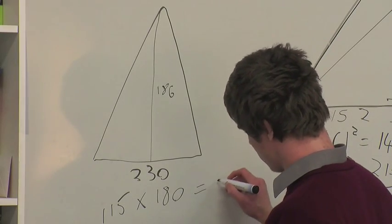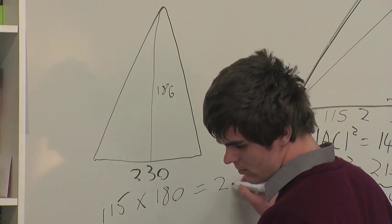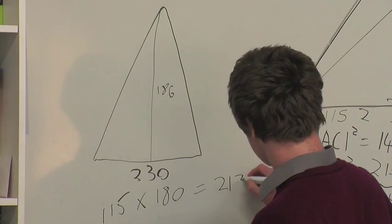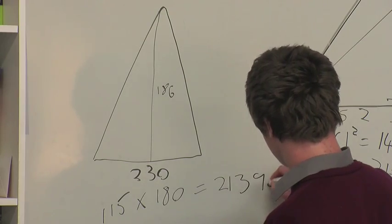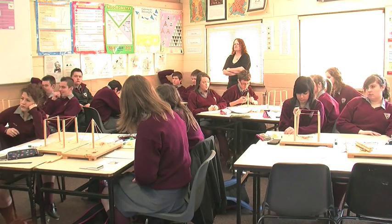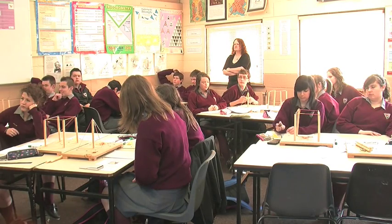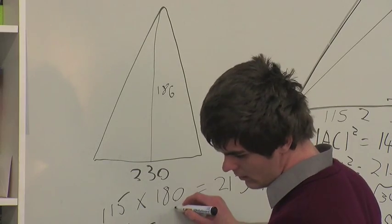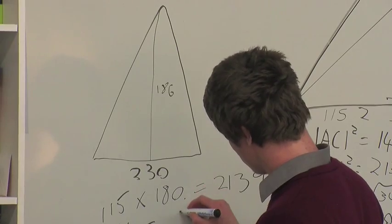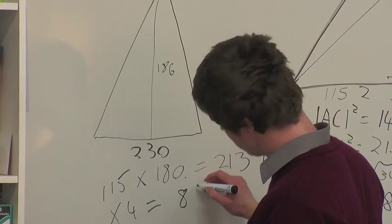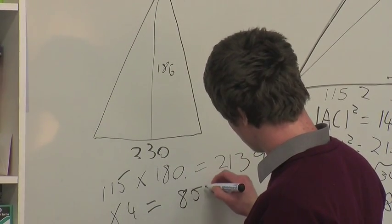That equals 21,390. We solved the side of a pyramid — it turned out one side is equal to 21,000 metres, which is near the equivalent of three football pitches.